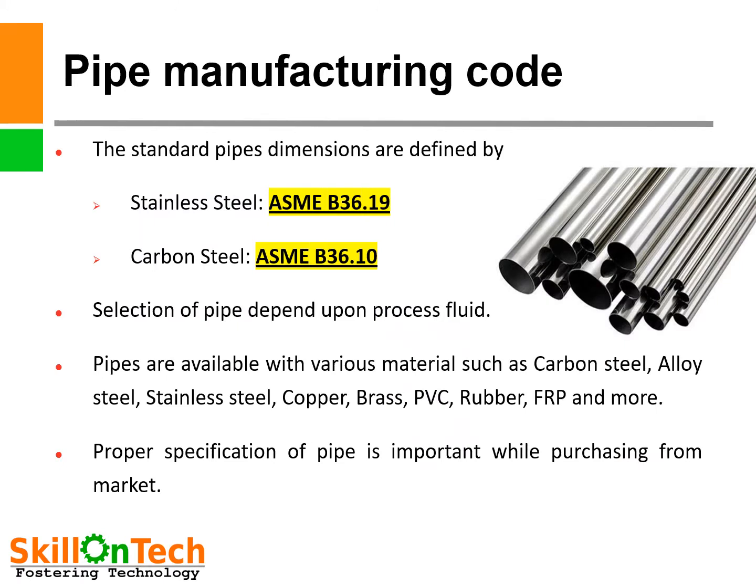Pipe manufacturing codes. The standard pipe dimensions are defined by: for stainless steel, ASME B36.19, and for carbon steel, ASME B36.10.